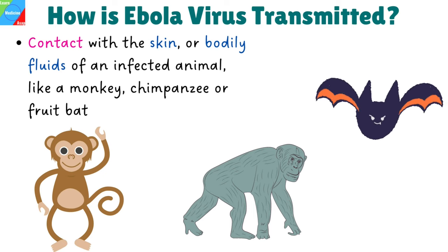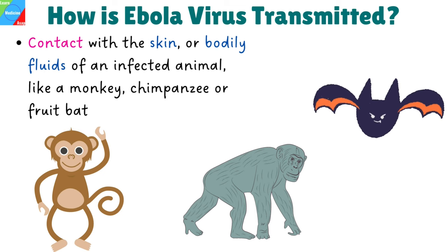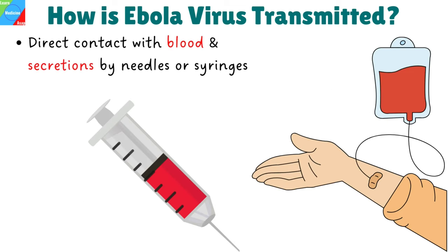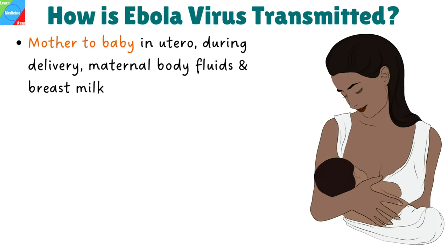How is Ebola virus transmitted? It spreads to people by contact with the skin or bodily fluids of an infected animal, like a monkey, chimpanzee, or fruit bat. Human-to-human transmission occurs via direct contact with blood and secretions, or by contact with blood and secretions that remain on clothing, and also by needles or syringes or other medical supplies used to treat Ebola-infected patients. In pregnant women, the virus may be transmitted from mother to baby in utero, during delivery, or through contact with maternal body fluids after birth, and also through breast milk.